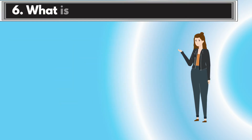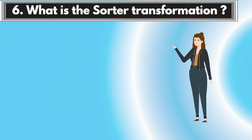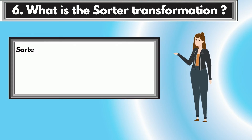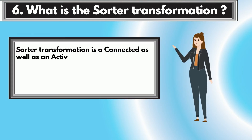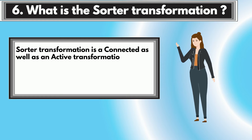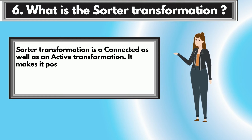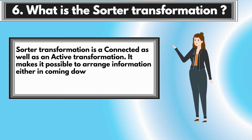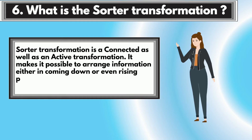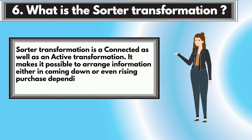Question 6: What is the Sorter Transformation? Sorter Transformation is a connected as well as an active transformation. It makes it possible to arrange information either in descending or ascending order depending on a specified field.